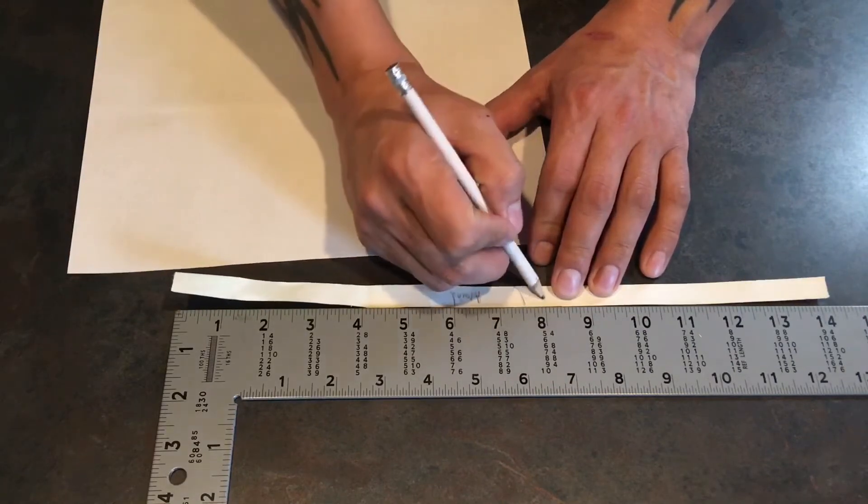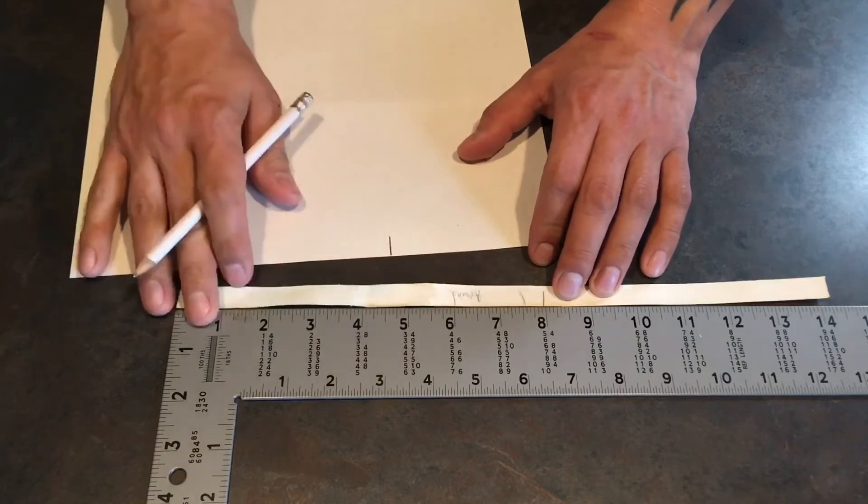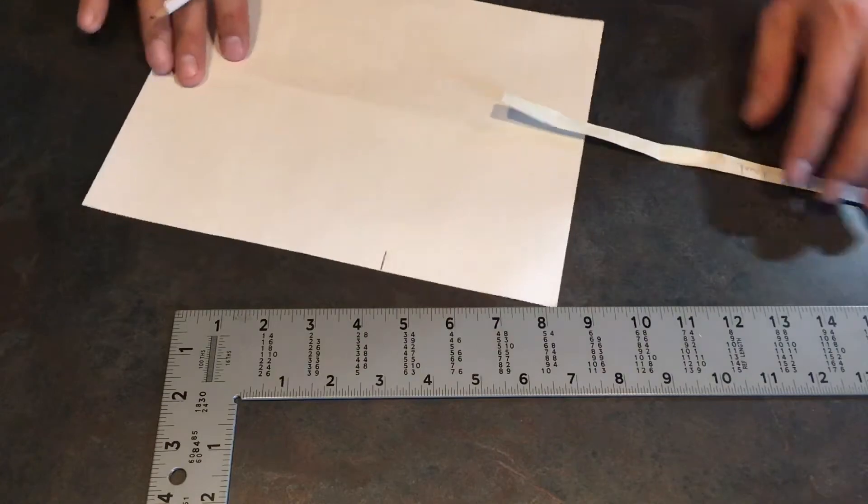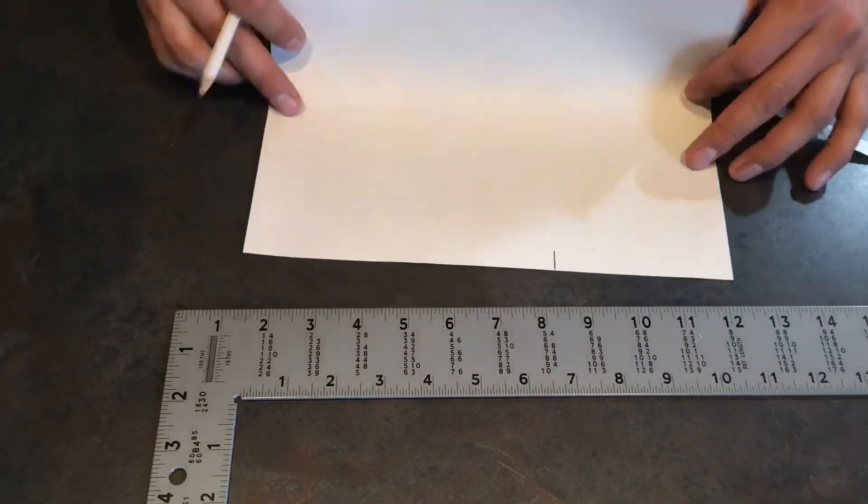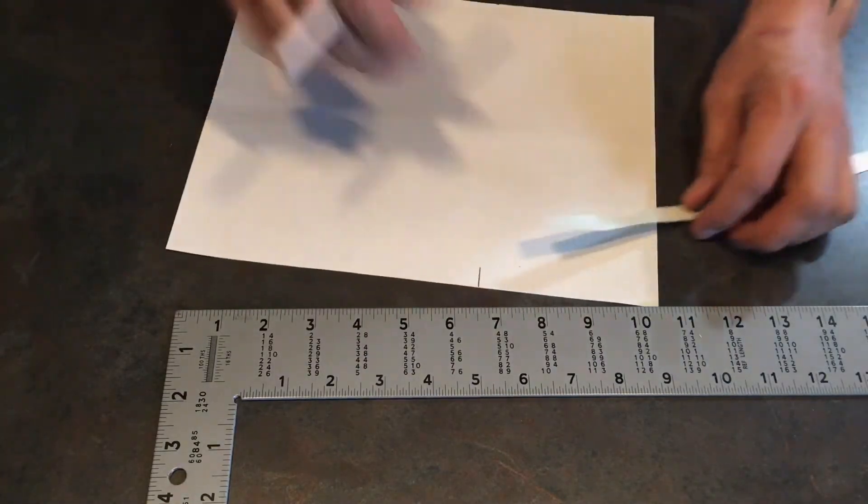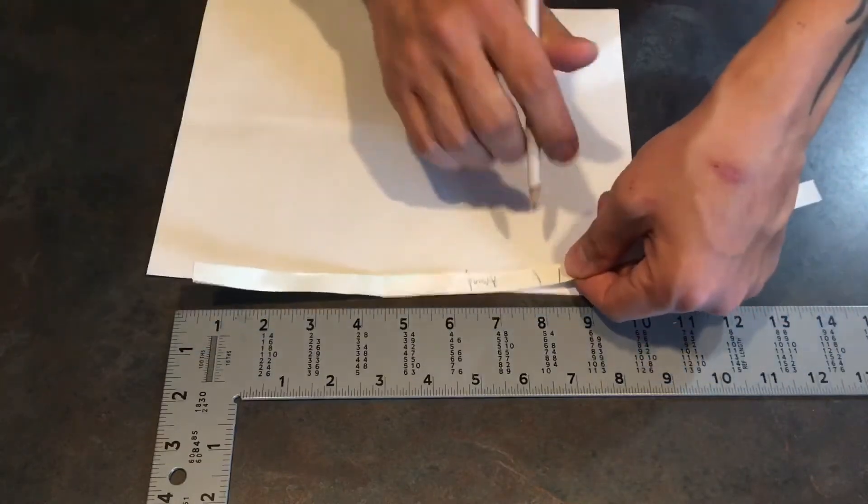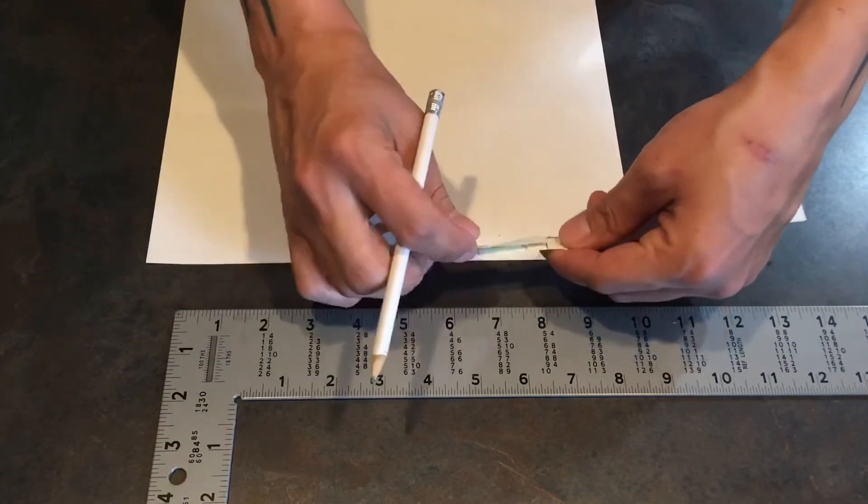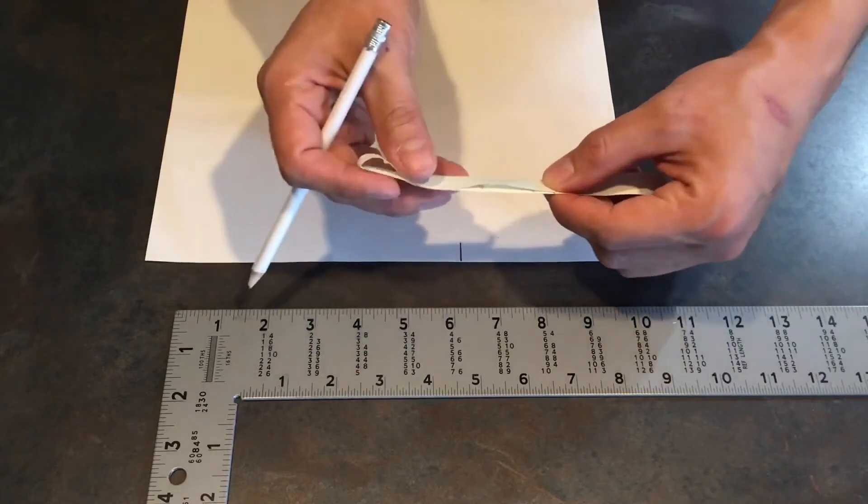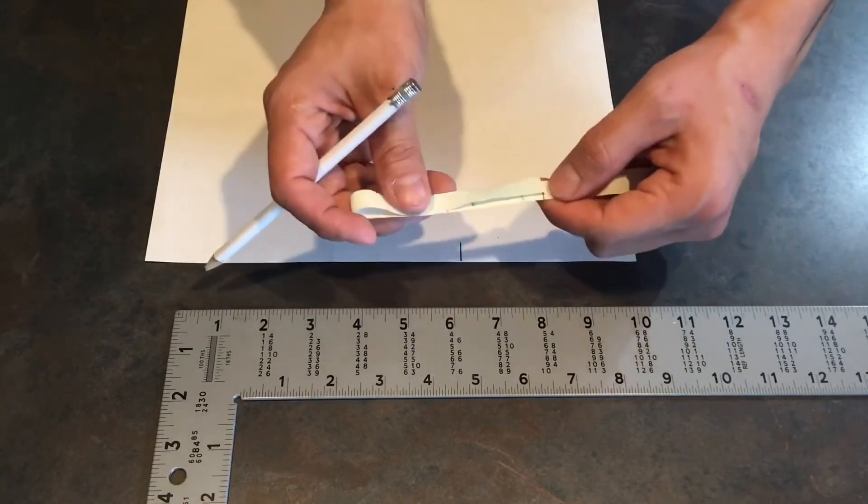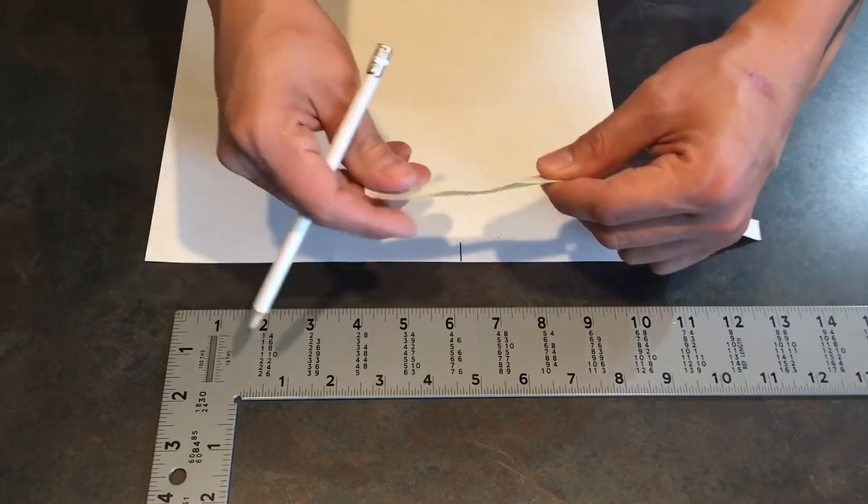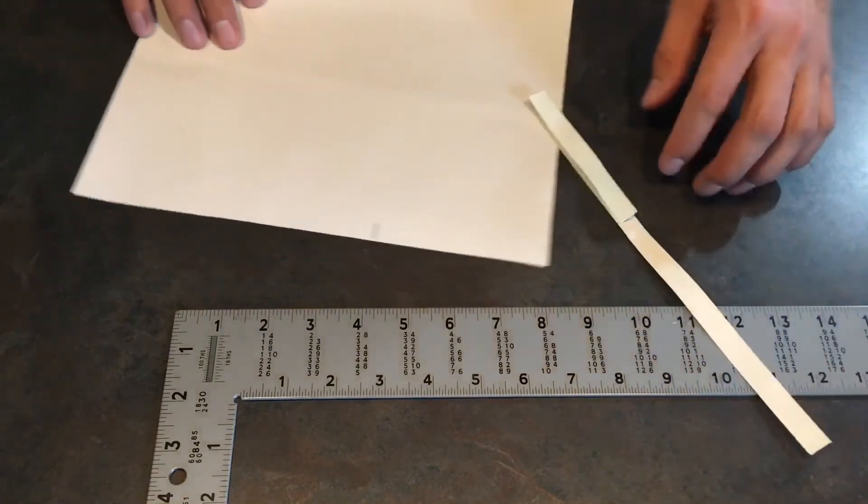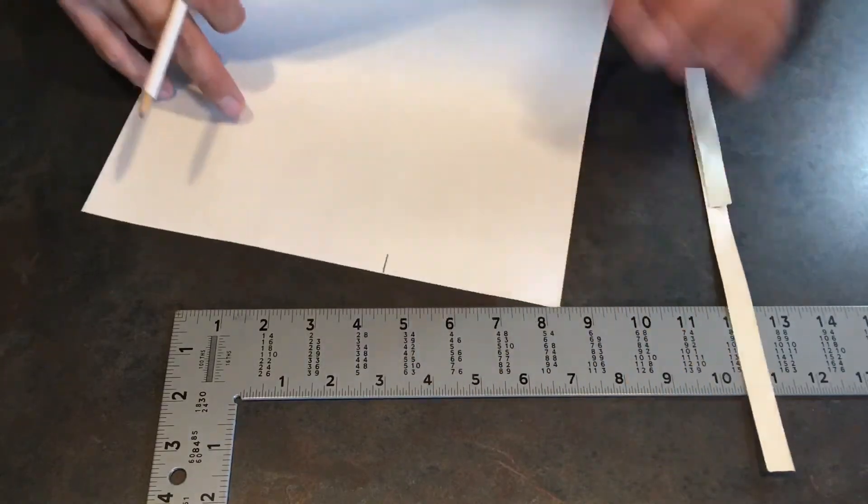So it's going to be eight inches. Take your piece of paper, your string, tape measure, or measuring tape, and fold it in half right at the eight inch mark.